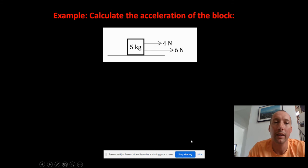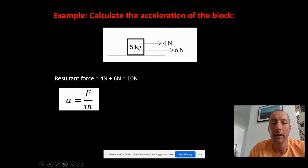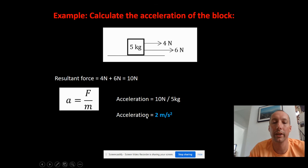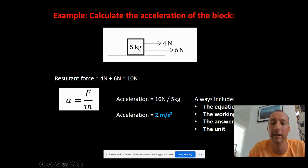Here's the first problem: calculate the acceleration of a five kilogram block with two forces pulling on it. First, we calculate the resultant force. Both forces act in the same direction, so the resultant is four Newtons plus six Newtons equals ten Newtons. Now using the equation: acceleration equals force divided by mass, so ten divided by five gives an acceleration of ten meters per second squared. Remember to always include the equation, the working, the answer, and the unit.